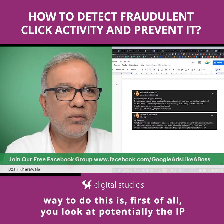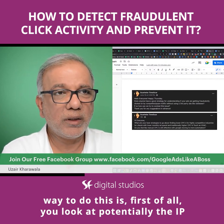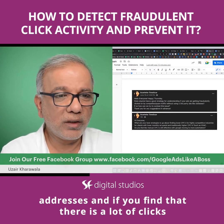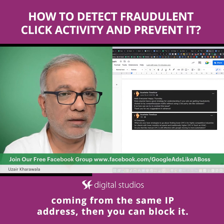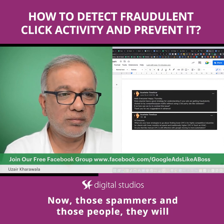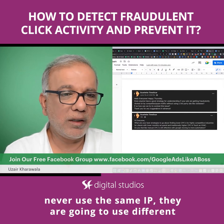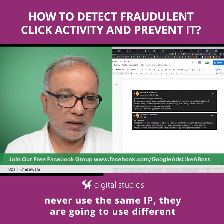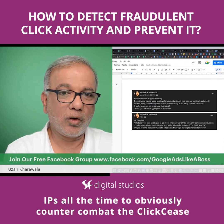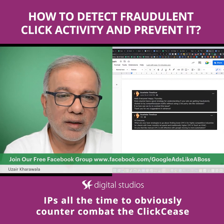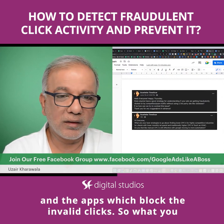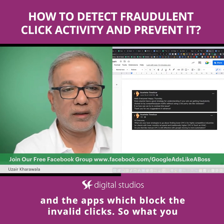The first way to approach this is to look at the IP addresses. If you find that a lot of clicks are coming from the same IP address, you can block it. However, those spammers will never use the same IP — they're going to use different IPs all the time to counter tools like ClickCease and other apps that block invalid clicks.